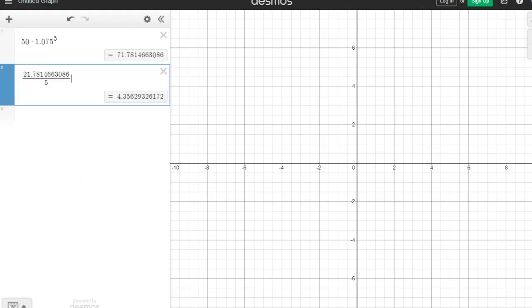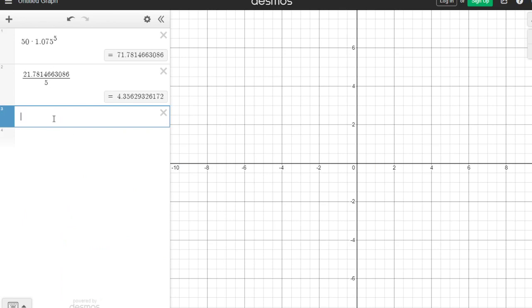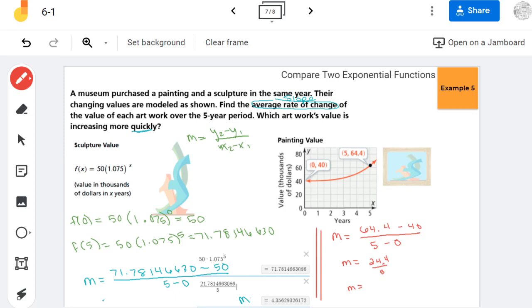And that's going to be an easier calculation. 4.88. So now we've done all the calculation. Now we have to think about which artwork's value is increasing more quickly.